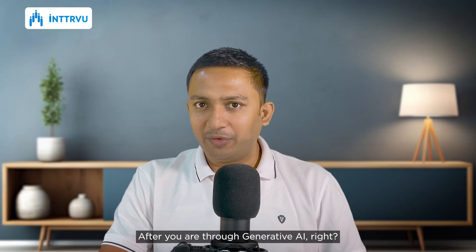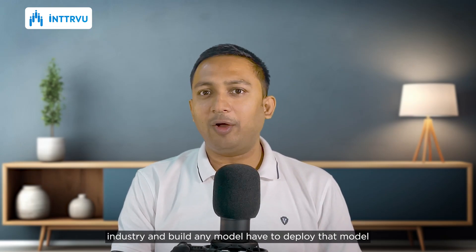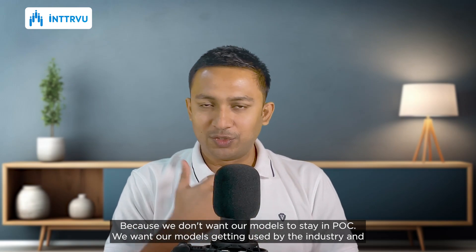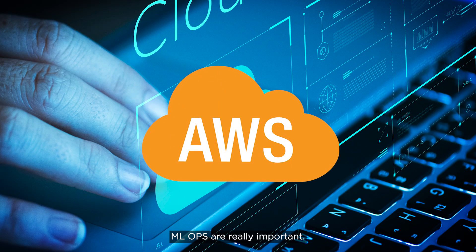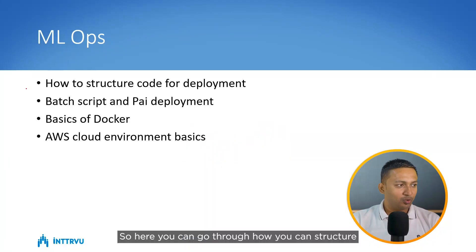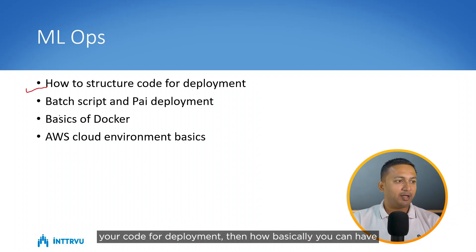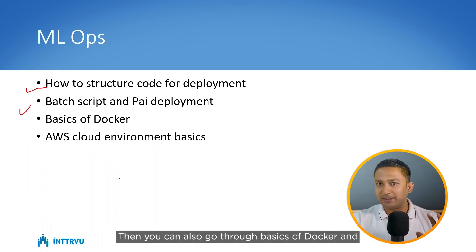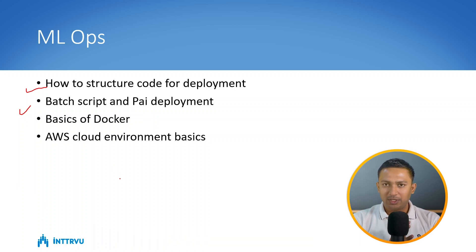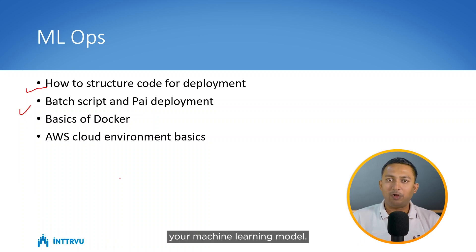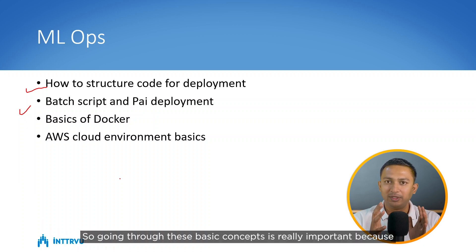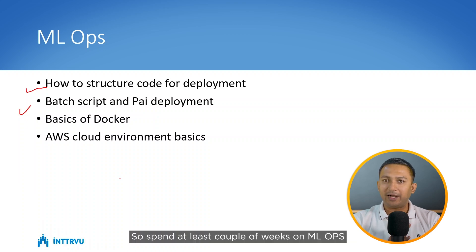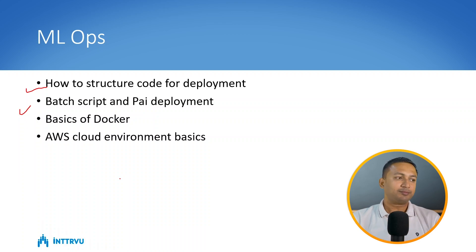After generative AI, the next important area is MLOps, because when you work in industry and build a model, you also have to deploy it. We don't want models to stay in a proof-of-concept stage — we want them creating business value. In MLOps, go through how to structure your code for deployment, how to deploy in the form of batch scripts or APIs, and learn the basics of Docker and cloud platforms like AWS. Spend at least a couple of weeks on MLOps concepts.